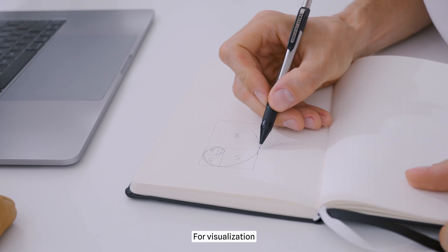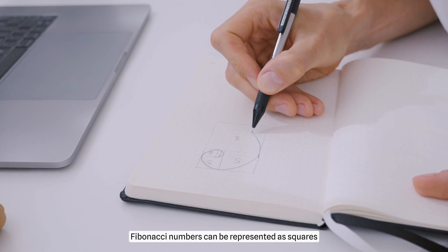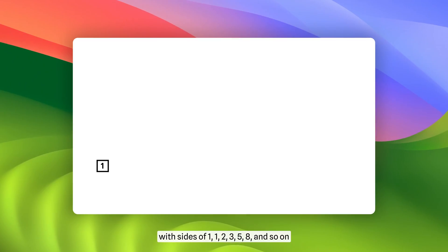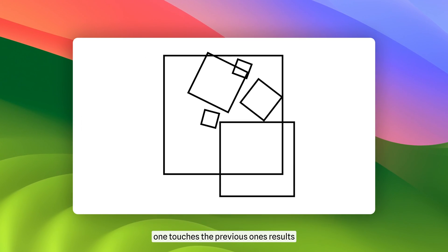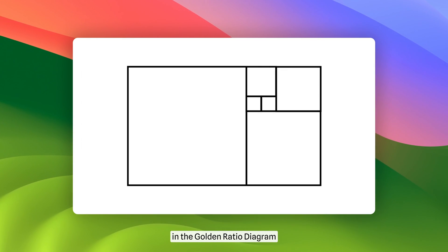For visualization, Fibonacci numbers can be represented as squares with sides of 1, 1, 2, 3, 5, 8, and so on. Placing these squares so that each successive one touches the previous one results in the golden ratio diagram.